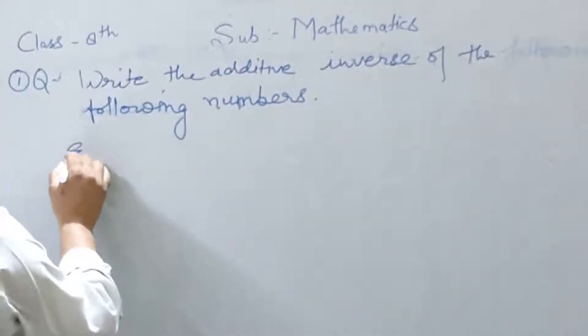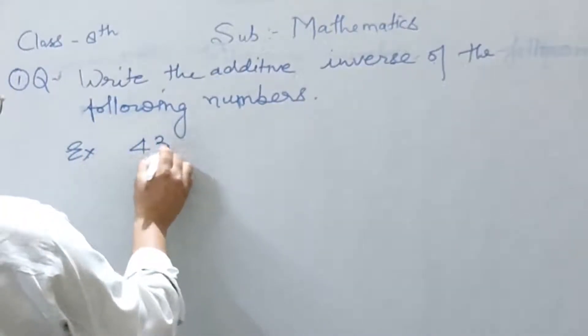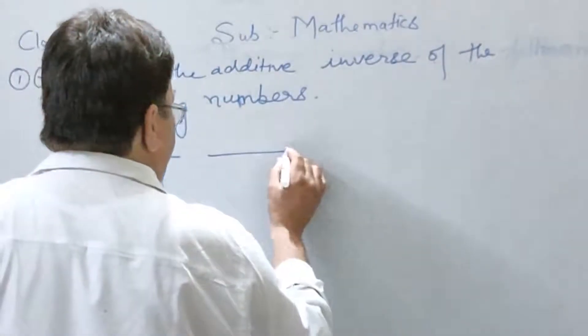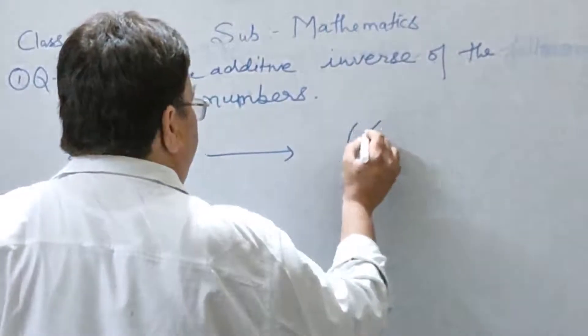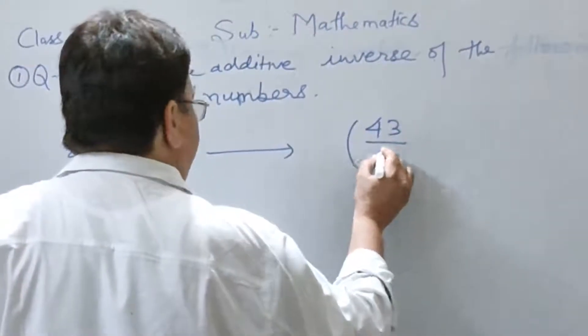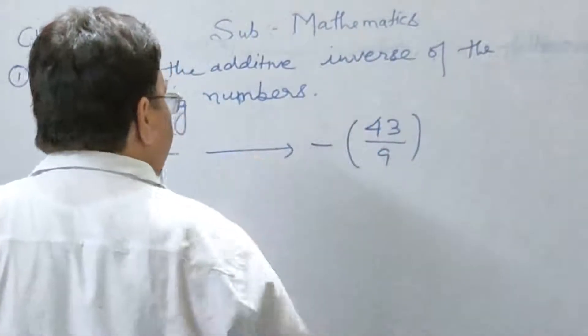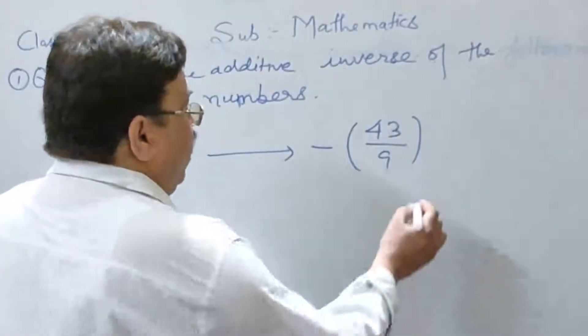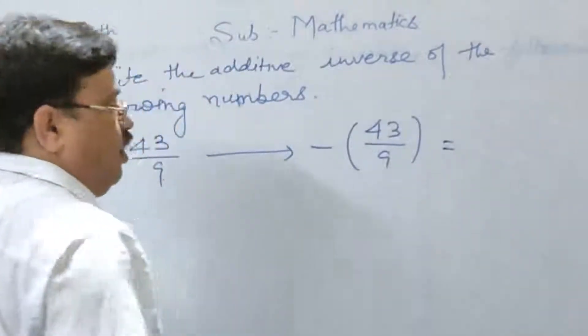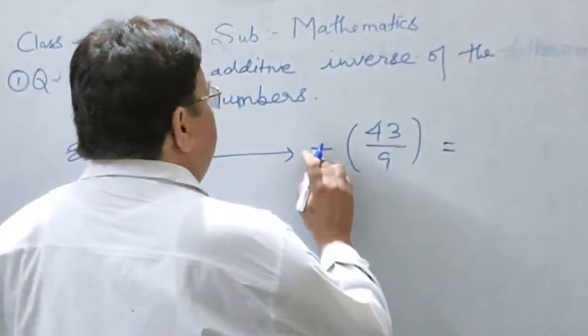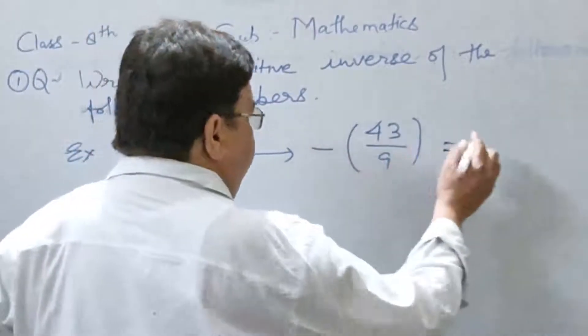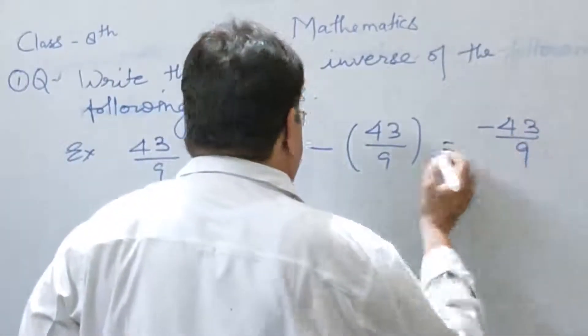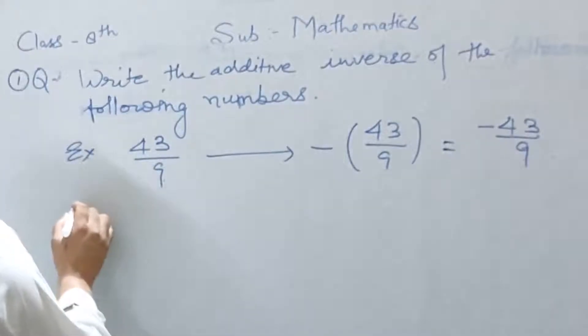Example number first, 43 by 9. Write the number in the bracket and then put minus before the number. Open the bracket. Minus 43 by 9. This is the first example.